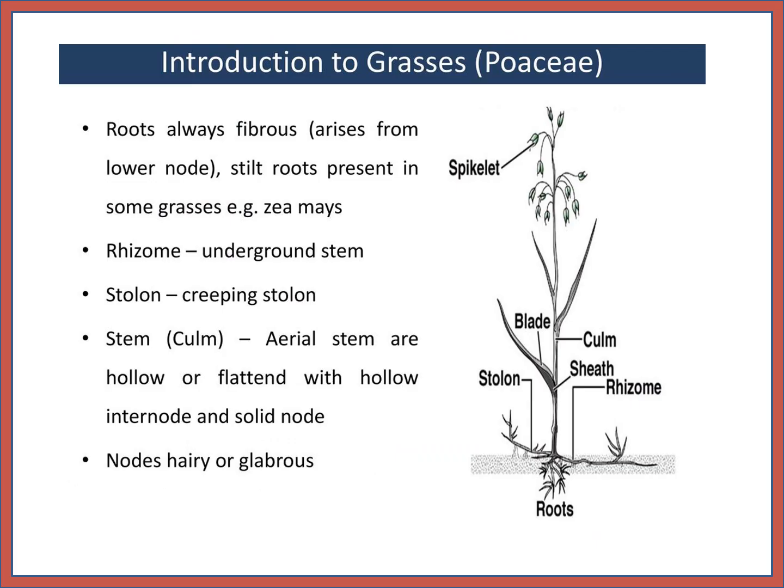Introduction to grasses, Poaceae. Root is always fibrous, arises from lower nodes; stilt roots present in some grasses. Rhizome is an underground stem. There are stolons and creeping stolons. The stem or culm — aerial stems — are hollow or flattened with hollow internodes and solid nodes.